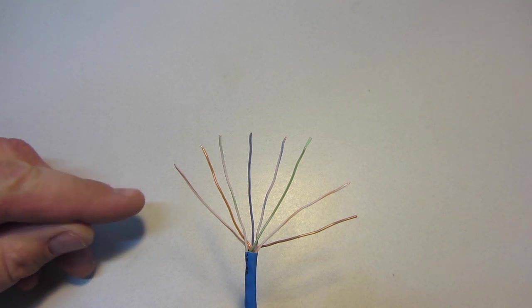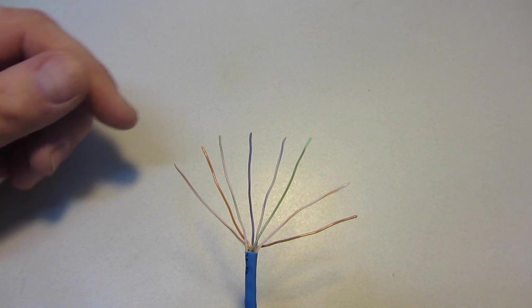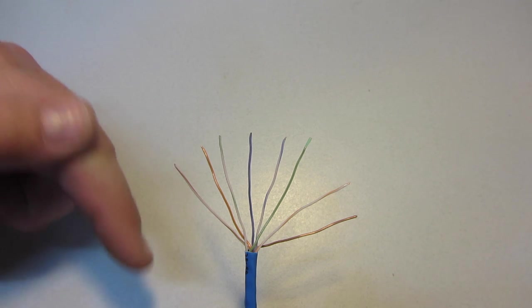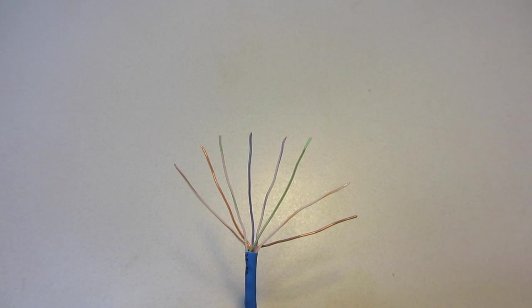This is a common color code. Really, a network just reads copper. As long as the other end of the wire matches this end, you're okay.